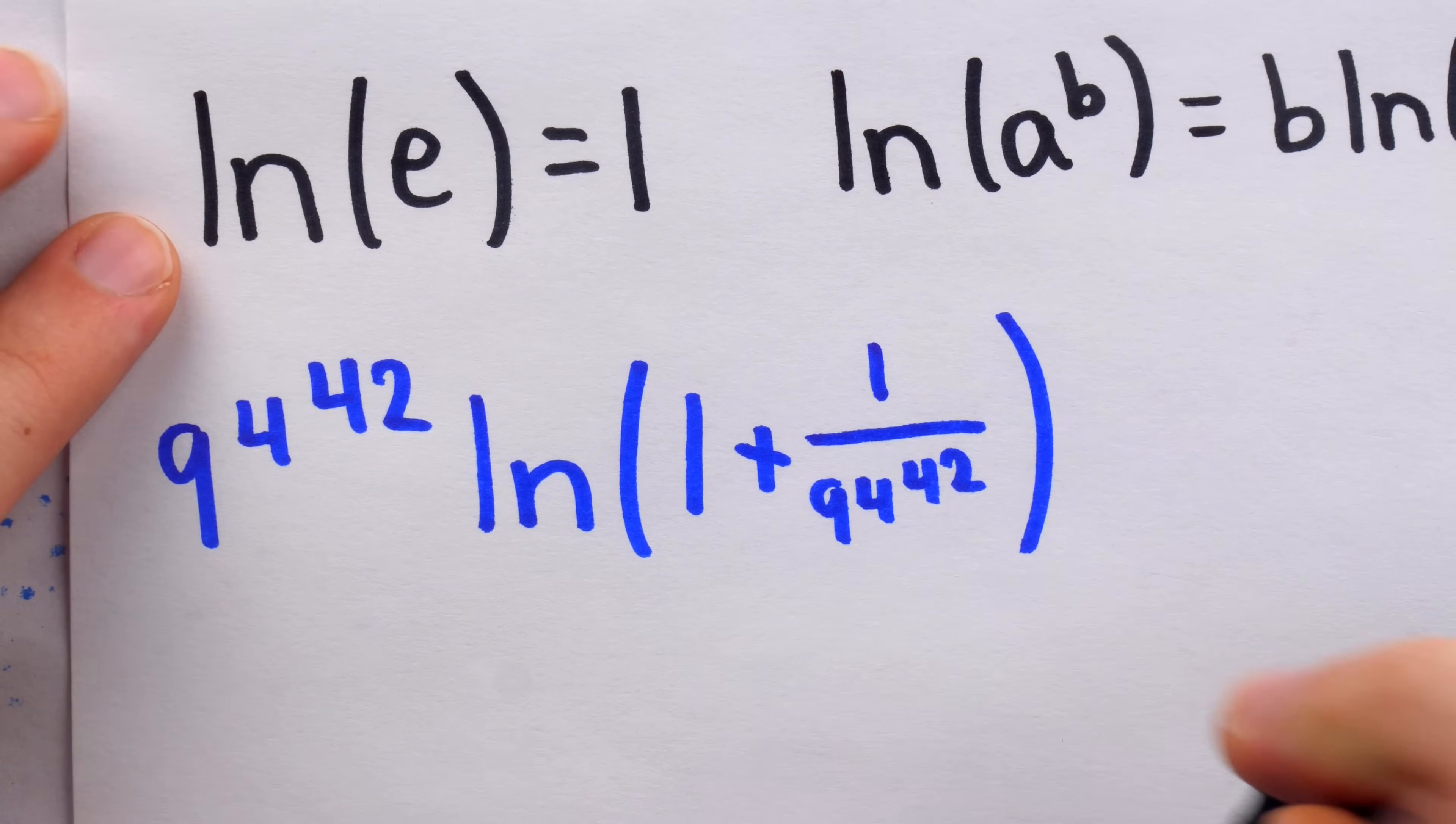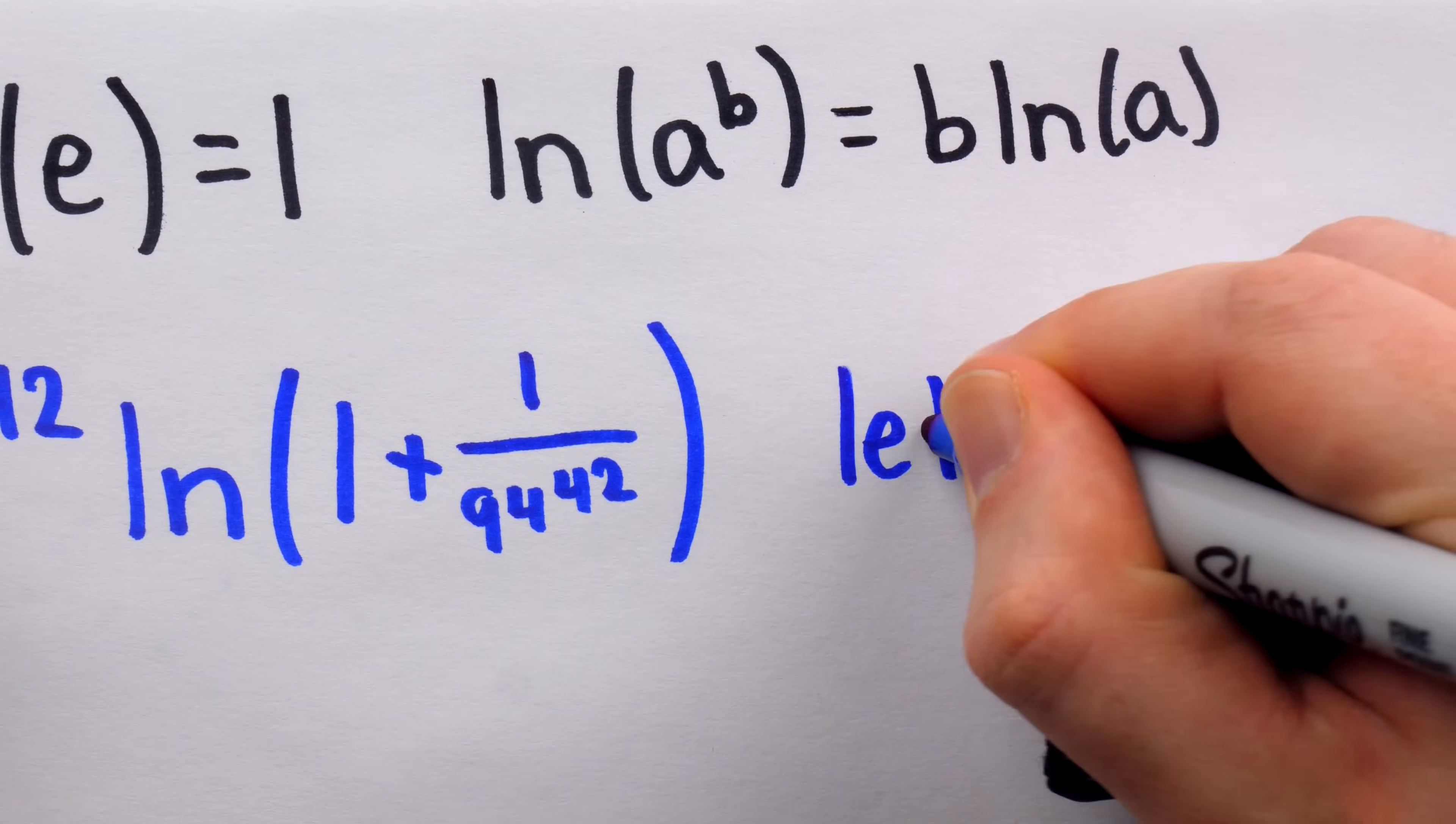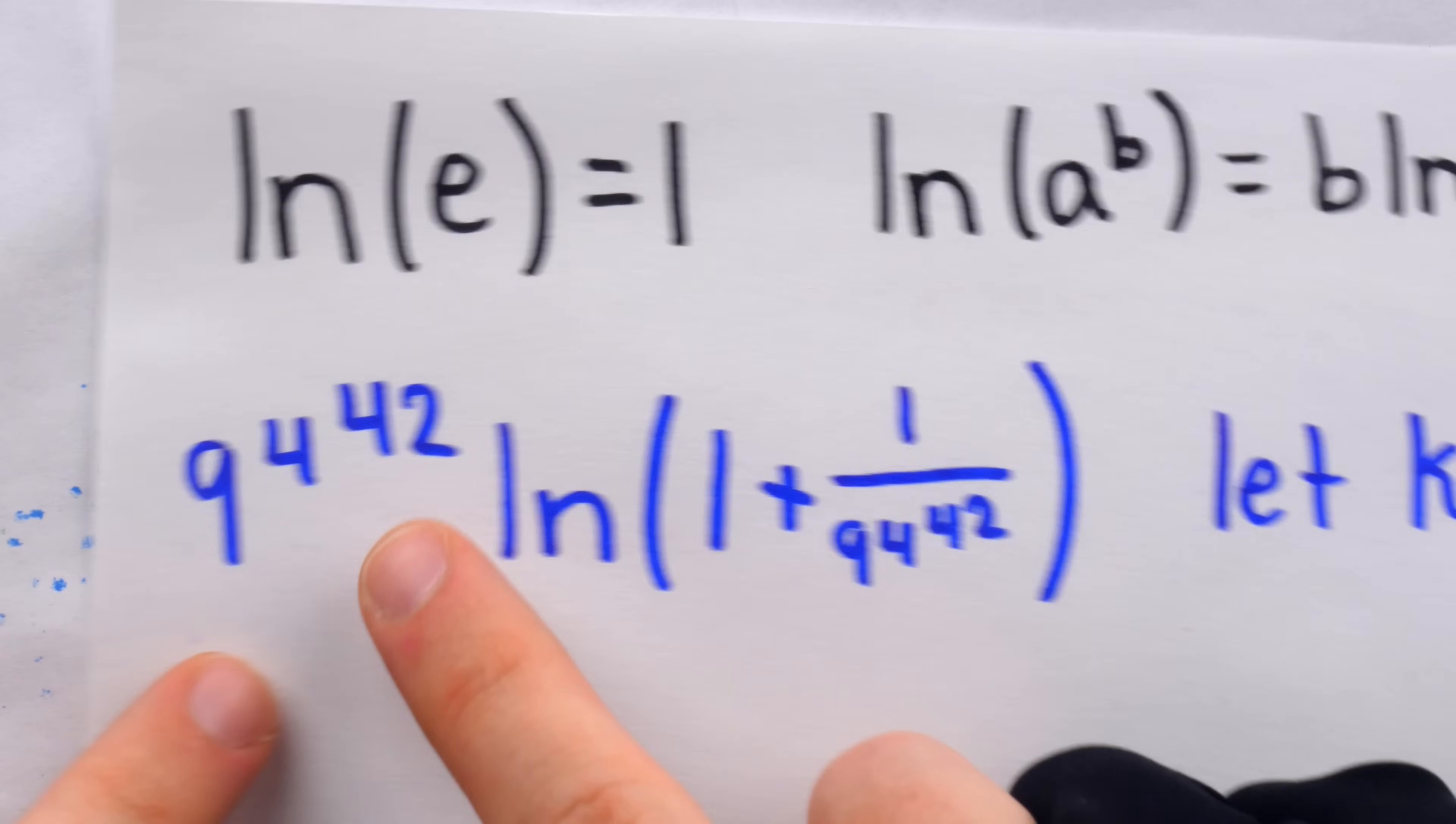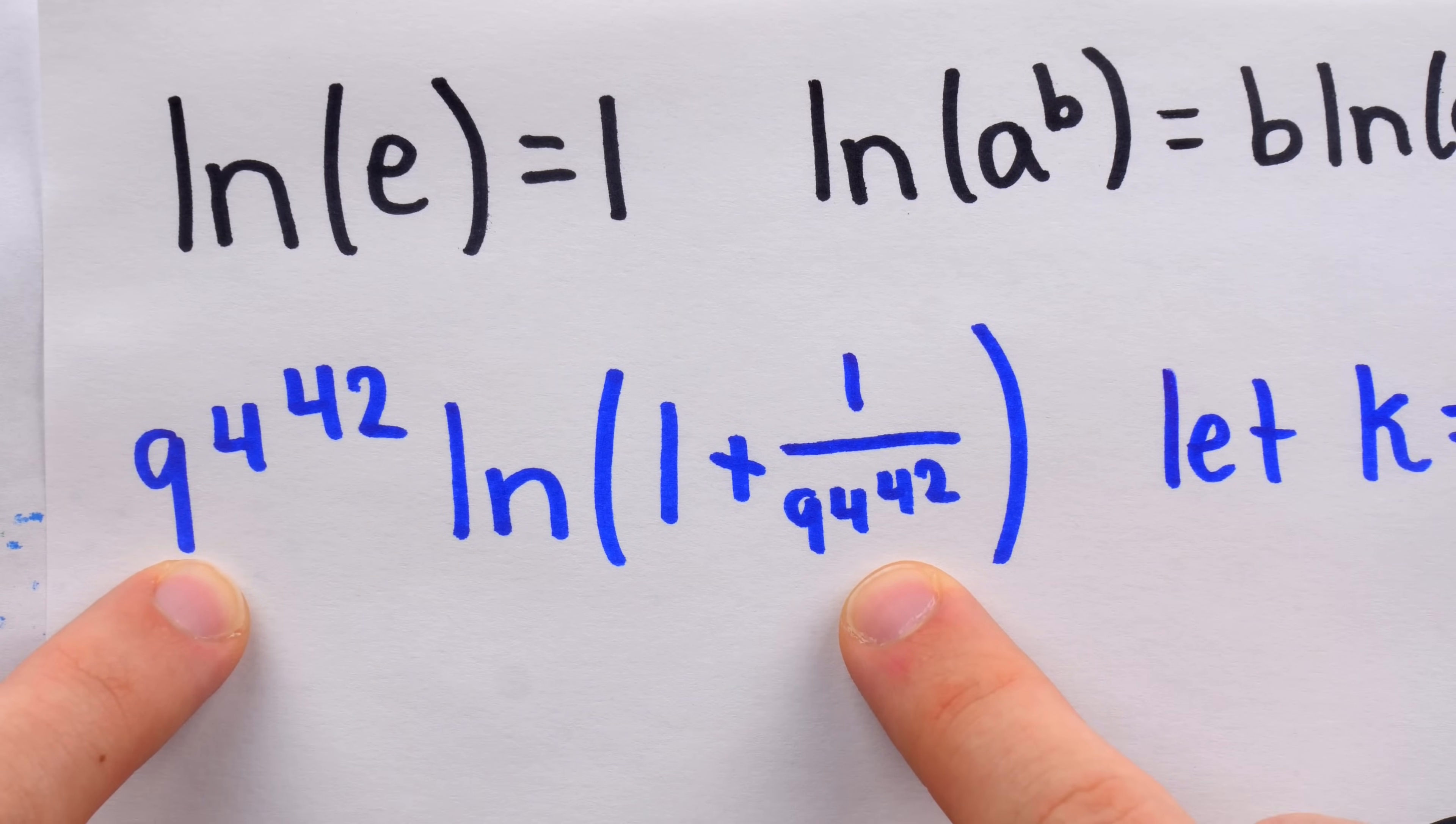It will be convenient so we don't have to keep writing 9 to the 4 to the 42 to just give it a name. Let's say we call that number K. So let K equal 9 to the power 4 to the power 42. Then this value should be very close to 1, but how do we show that's the case?